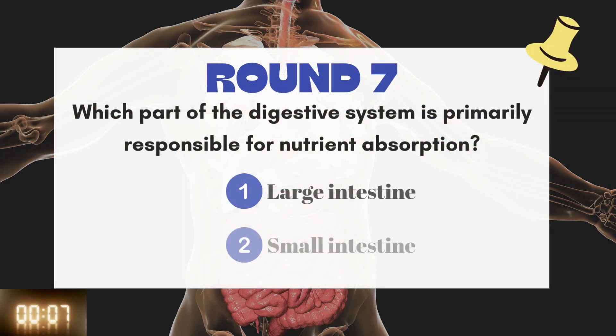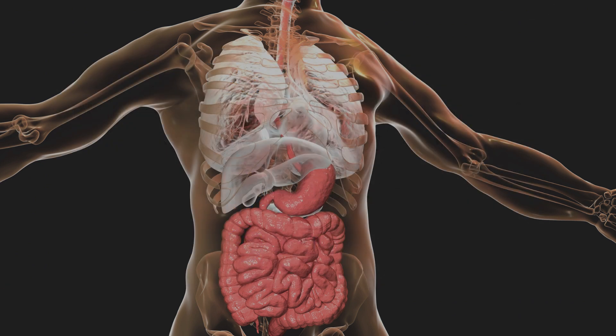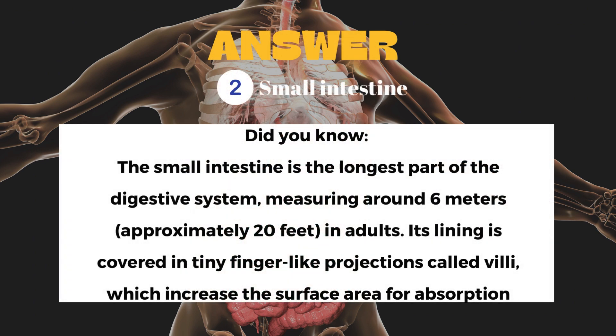Round seven: Which part of the digestive system is primarily responsible for nutrient absorption? The answer is the small intestine.